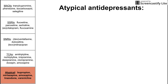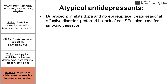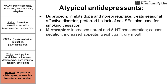Lastly, we have a grab bag of atypical antidepressants. Bupropion inhibits dopamine and norepinephrine reuptake and is specifically used for seasonal affective disorder. It's often preferred for general depression because it lacks the sexual side effects. Bupropion is also one of two drugs used for smoking cessation. Mirtazapine increases norepinephrine and 5-HT concentration, and causes sedation and increased appetite.